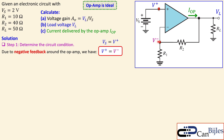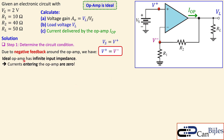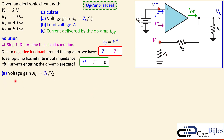We know that V-plus is also Vs, because it is directly connected to it, and therefore V-minus is also Vs. For an ideal op-amp, regardless of feedback configuration, the currents entering the op-amp are zero — that means I-plus and I-minus are both zero — because the input impedance is infinite, so it is effectively an ideal open circuit at the inputs.